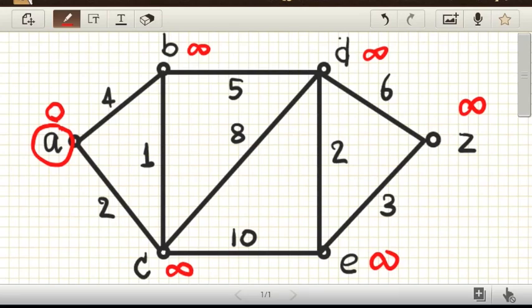When A is selected to the set, we have to update neighbors of A, which are B and C, because they have edges that connect A to those vertices. The new cost will be zero plus four for B and plus two for C.